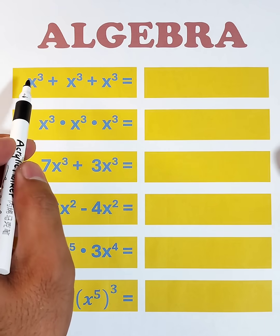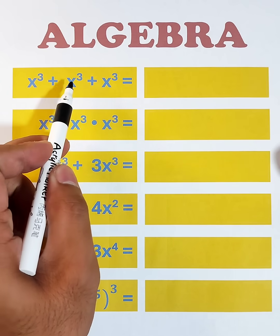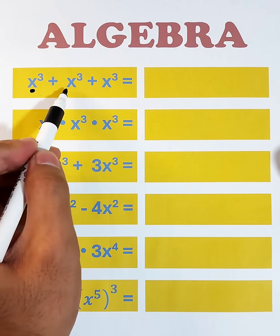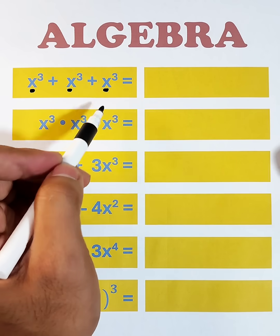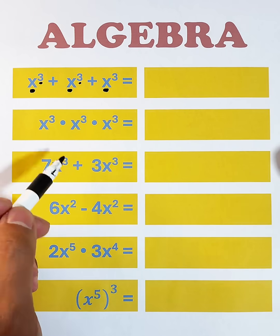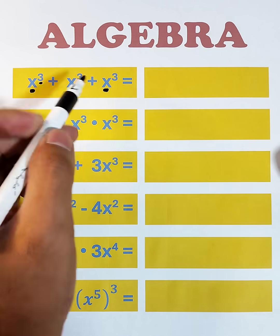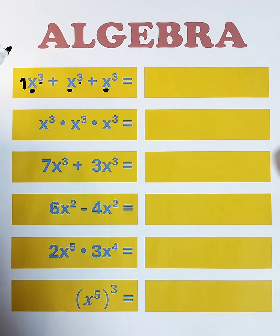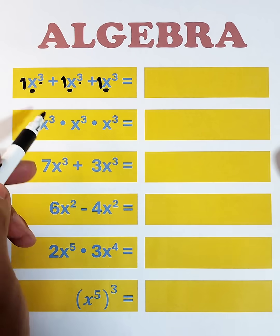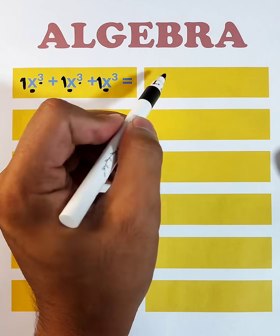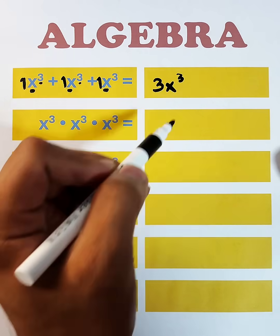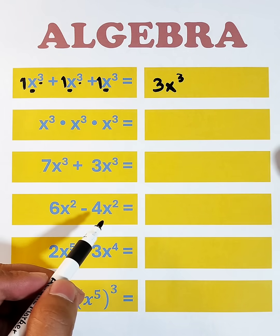What we have here is x cubed plus x cubed plus x cubed. We can add these terms because they have the same variables as well as the same exponent. As you can see, we have x cubed, x cubed. We have here an invisible one, an invisible one, an invisible one. That is 1 plus 1 plus 1, that would be 3. Then copy the common variable and the exponent, and the answer is 3x cubed.